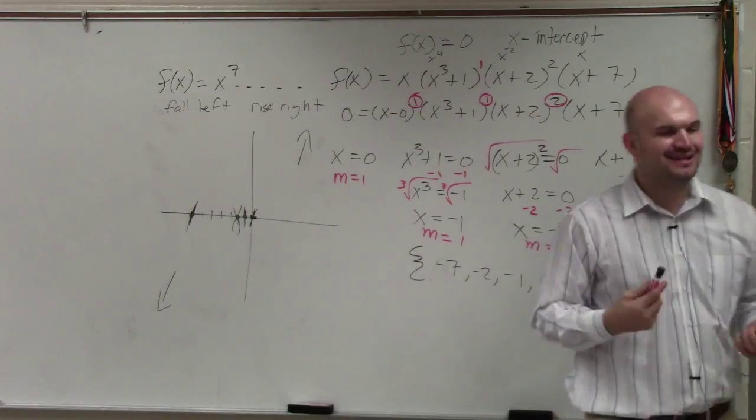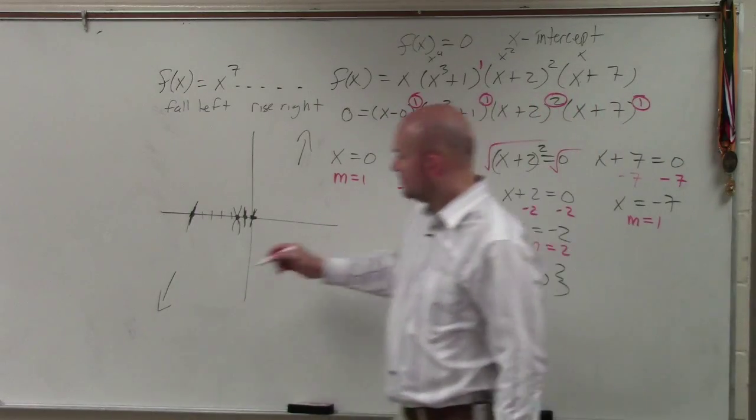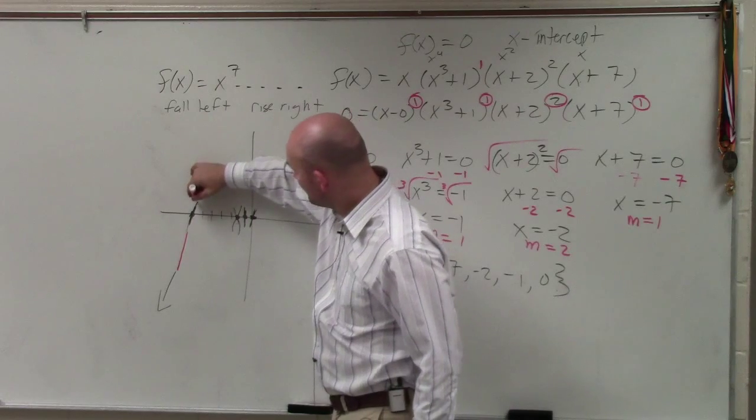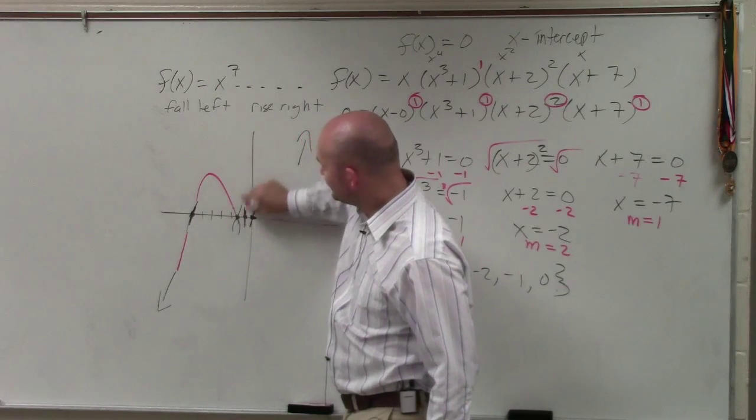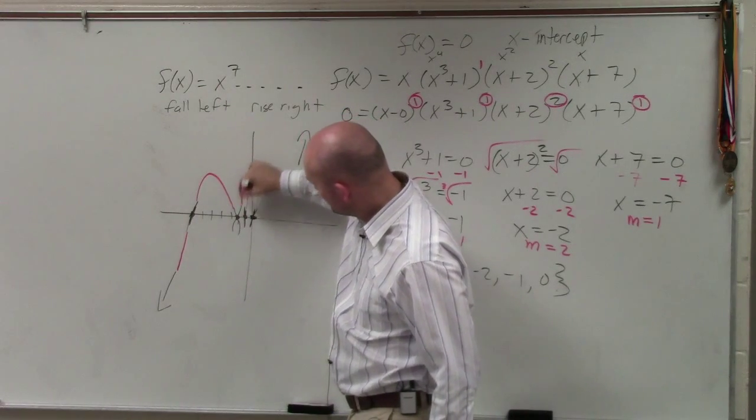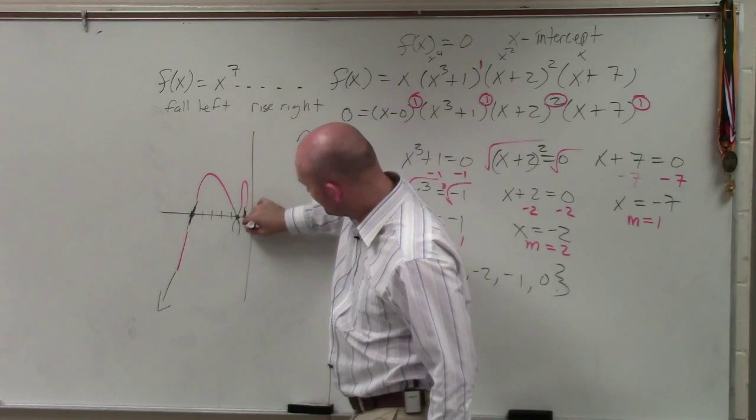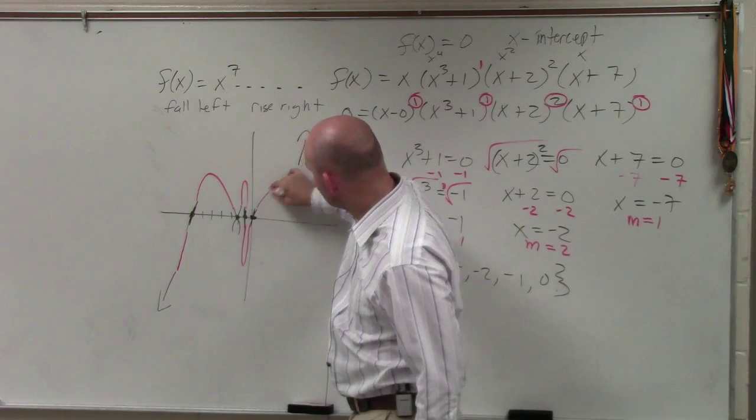So now, it's kind of like a little game. The graph has to cross through this zero. Here, it has to bounce. So then it goes back through. It has to go through this zero, and then it has to go through that zero.